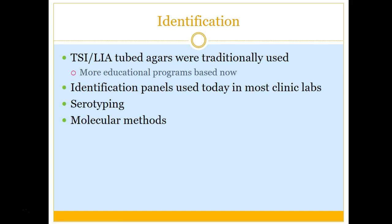Every lab is pretty much using analyzers now — identification panels filled with different tests are put into the analyzer, which reads the reactions and determines the bacteria. You can also do serotyping to determine more specifically which bacterial strain, and molecular technology is really becoming huge, making for a faster and more efficient identification process.